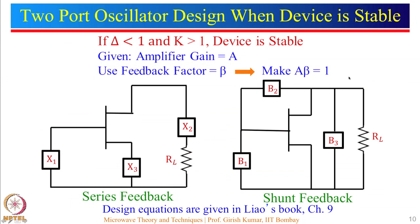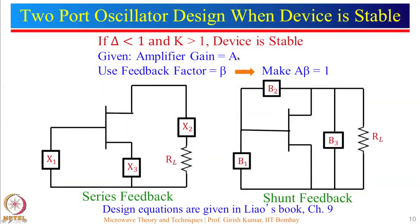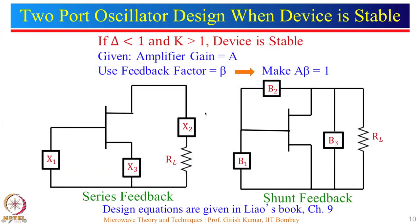Now I will discuss something very important: the value of gain A and how it affects the output. To start the oscillation, we make A·beta greater than 1, and when oscillations are sustained, A·beta equals 1. Consider whether we start with A equal to 2, 10, or 20 — will the output amplitude be the same in all cases? The answer is not really. When designing an oscillator, please choose a reasonable value of gain.